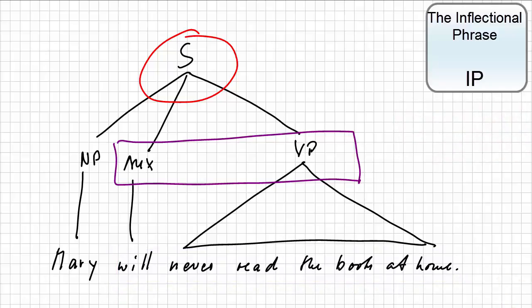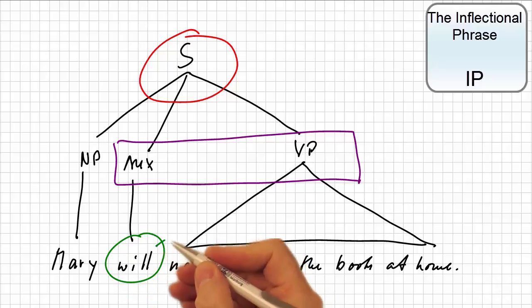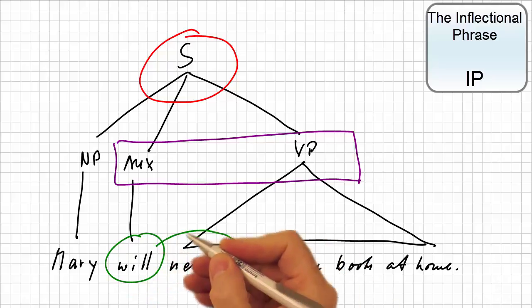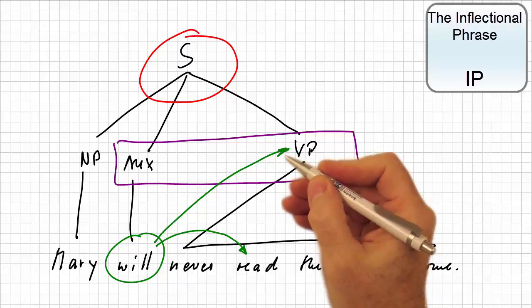Furthermore, auxiliaries appear to be heads of the whole sentence. They determine the properties of the verb and hence the type of verb phrase, suggesting that the verb phrase is a sister of the auxiliary.